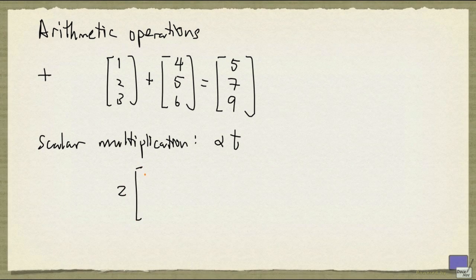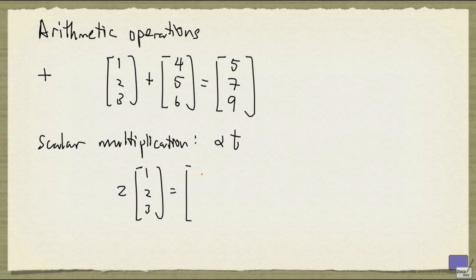So for example, if I have 2 times the tuple 1 to 3, what this gives us is 2, 4, and 6.